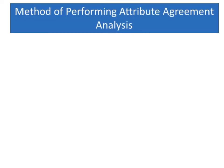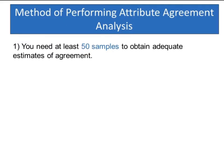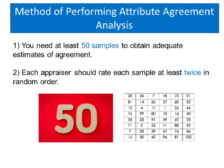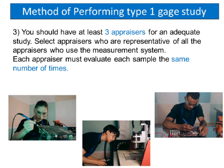Method of performing attribute agreement analysis. First, you need at least 50 samples to obtain adequate estimates of agreement. Second, each appraiser should rate each sample at least twice in random order. Third, you should have at least 3 appraisers for an adequate study. Select appraisers who are representative of all appraisers who use the measurement system. Each appraiser must evaluate each sample the same number of times.